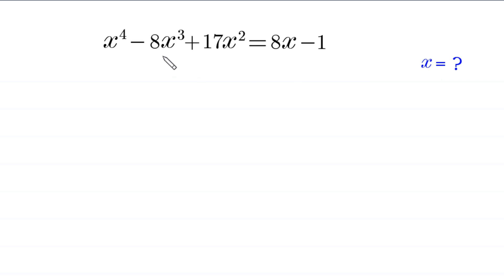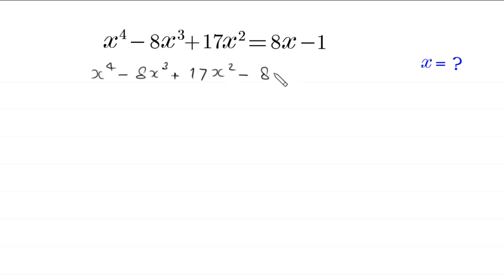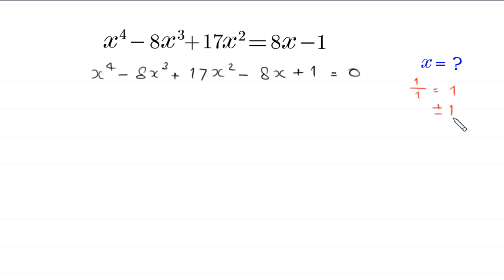First, we write this equation in standard form: x to the power 4 minus 8x cubed plus 17x squared. Move 8x to the left hand side — this will become negative 8x. This negative 1 will become plus 1, equal to 0. If we divide 1 by the leading coefficient 1, we get 1, and factors of 1 are plus or minus 1. If we check 1 in this equation, 1 is not a solution. And if we check negative 1, negative 1 is not a solution either.